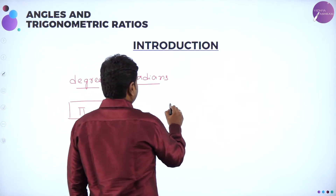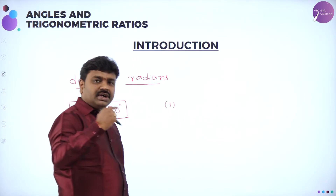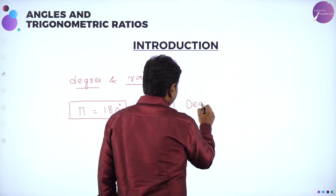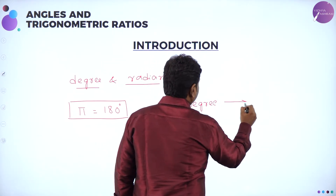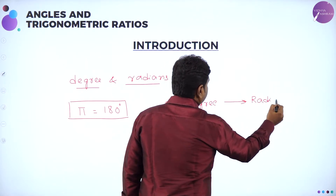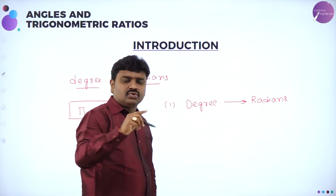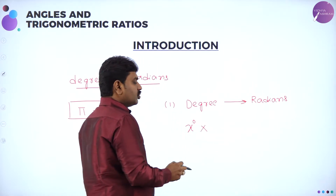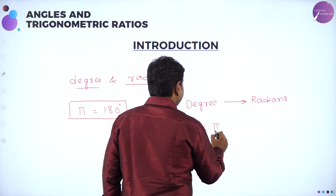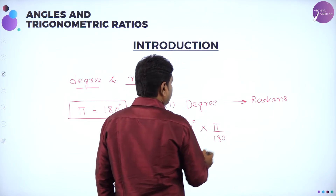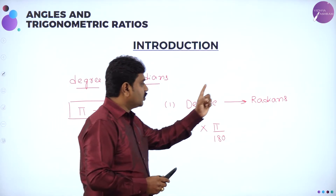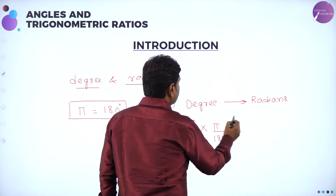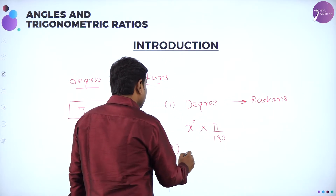We have two techniques: one is to convert degree to radian, and the other is to convert radian to degree. To convert degrees to radians, if you have x degrees, multiply by pi divided by 180. If you multiply pi by 180, the degrees become radians. So to convert degree to radians, multiply by pi/180.